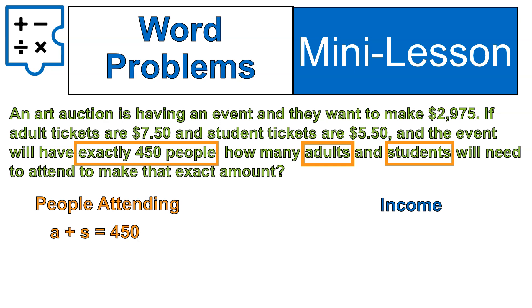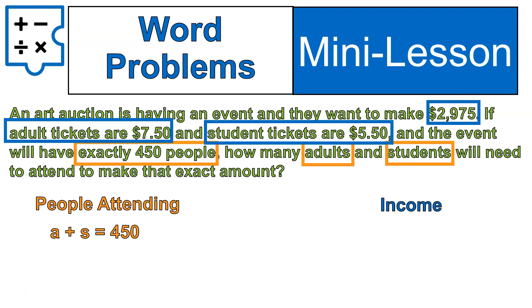When we're looking at income, we have to look for all the money pieces. There's $2,975. There's the adult ticket at $7.50 and the student tickets at $5.50. This equation is going to be a little more complicated. We multiply $7.50 times the number of adults coming — that's the income from adults. We add that to $5.50 times the number of students. That total amount equals $2,975. That's our second equation.